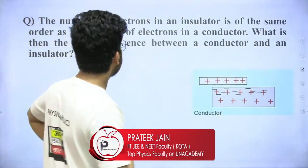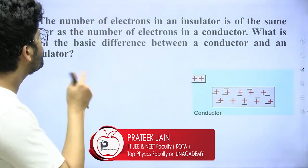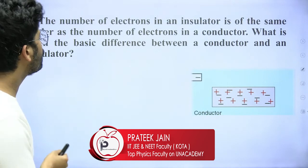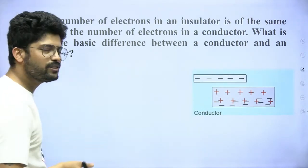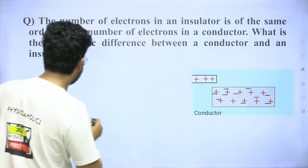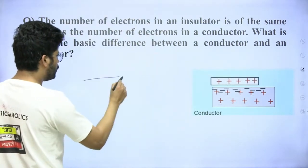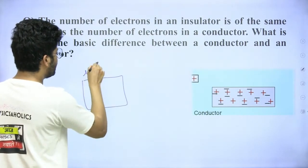The number of electrons in an insulator is of the same order as the number of electrons in a conductor. What is then the basic difference between a conductor and an insulator?